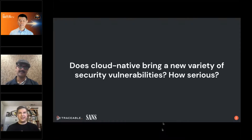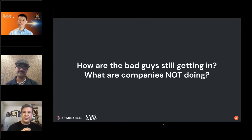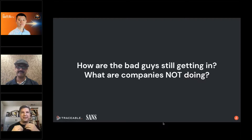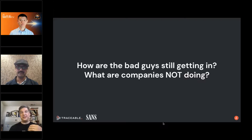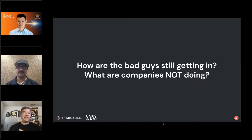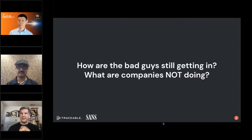That rolls right into the next thought: we've seen a lot of API-related high-profile data breaches. Bots and configuration challenges are out there, and we're getting more sophisticated challenges as well. In the past few years we've seen data breaches at Facebook, Uber, T-Mobile, US Postal Service, Shopify, and recently Peloton — these are all API breaches of one sort or another. These are major technology companies with significant investments in security. So how are the bad guys getting in? What are these companies not doing?